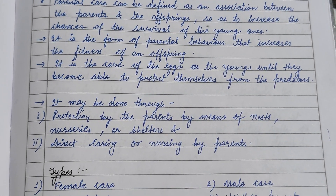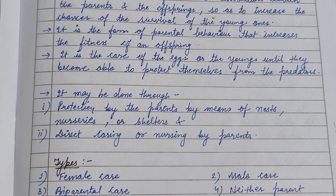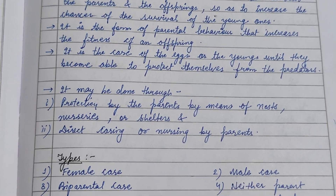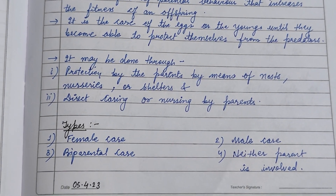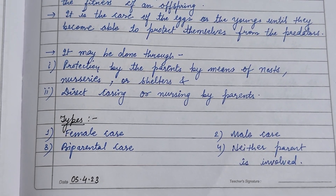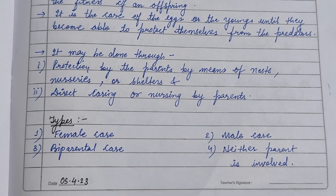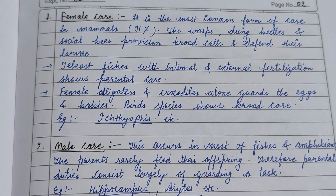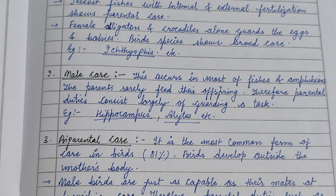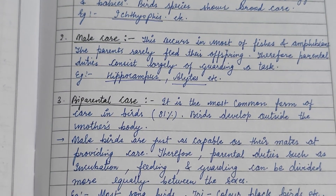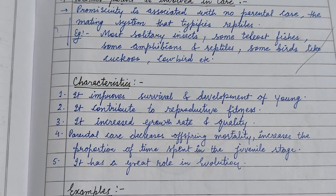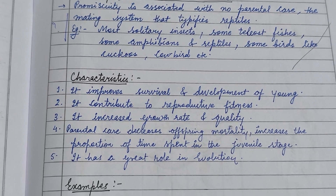Parental care is an association between the parents and their young ones, where there is proper care of the young ones so that they can develop. It may be through protection by the parents by means of a nest, direct caring, or nursing. Parental care may be female care, male care, or biparental care. An example of female care is the Ictio fish; male care includes the hippocampus and Alytes; and biparental care includes most of the birds.